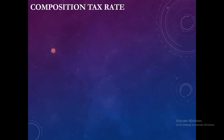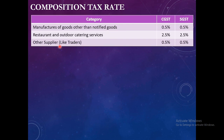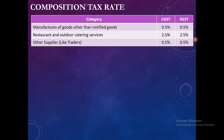Now let's look at the composition tax rate — how much tax is charged and for whom. There are three categories: manufacturer of goods other than notified goods, restaurant and outdoor catering services, and other suppliers (like traders). Manufacturers pay 1% — 0.5% CGST and 0.5% SGST. Restaurant and outdoor catering pay 5% — 2.5% CGST and 2.5% SGST. Other suppliers (traders) pay 1% — 0.5% CGST and 0.5% SGST. The taxable amount on which this tax is charged differs for each category.